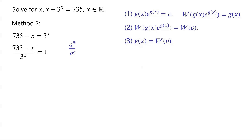We know that a to the power of m over a to the power of n is equal to a to the power of m minus n. By applying this, 1 over 3 to the power of x is equal to 3 to the power of negative x. So we can now write: